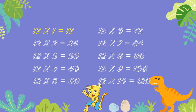12 ones are 12. 12 twos are 24. 12 threes are 36. 12 fours are 48. 12 fives are 60. 12 sixes are 72. 12 sevens are 84. 12 eights are 96. 12 nines are 108. 12 tens are 120.